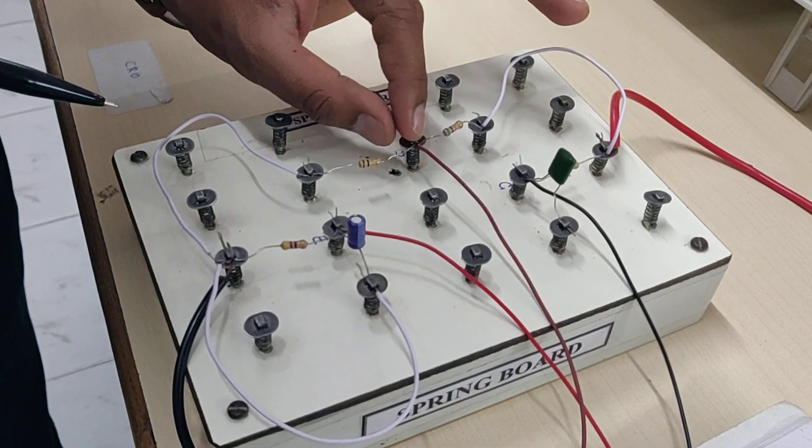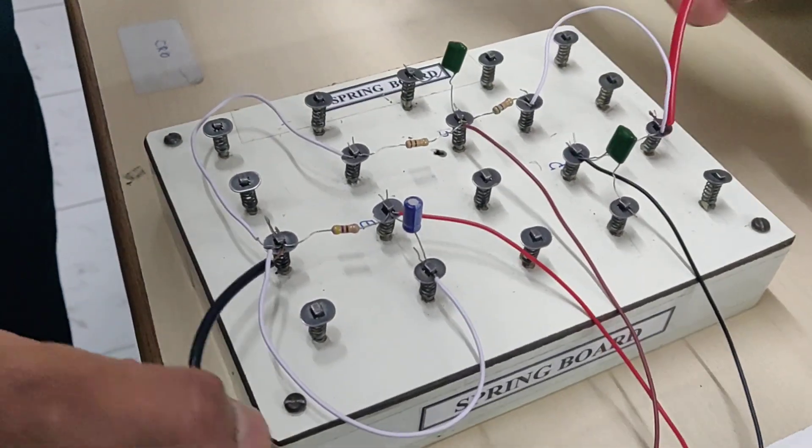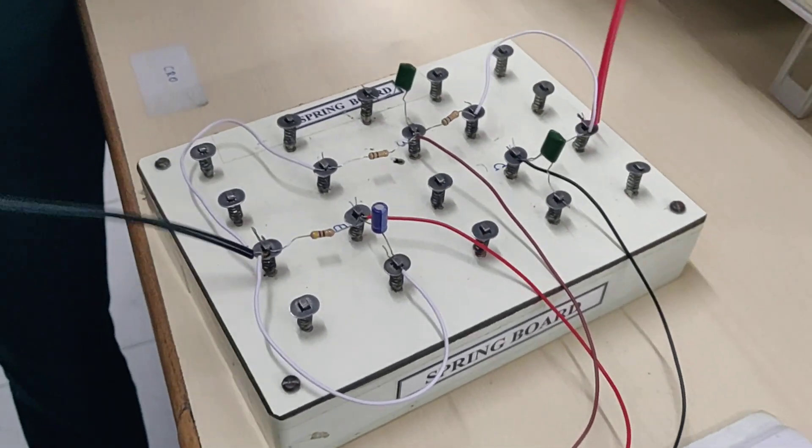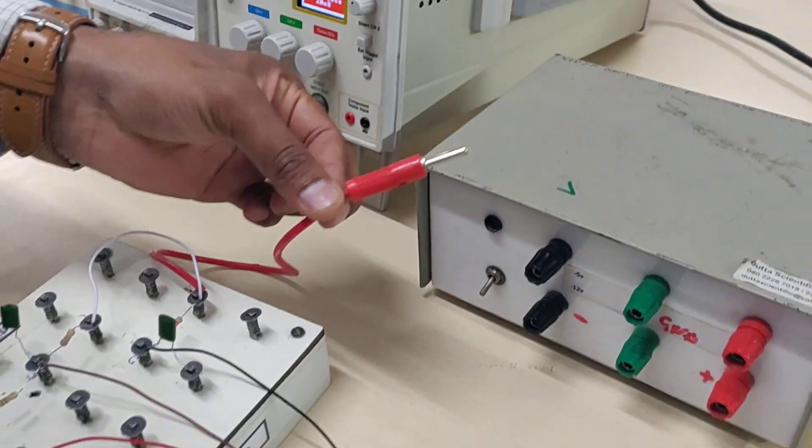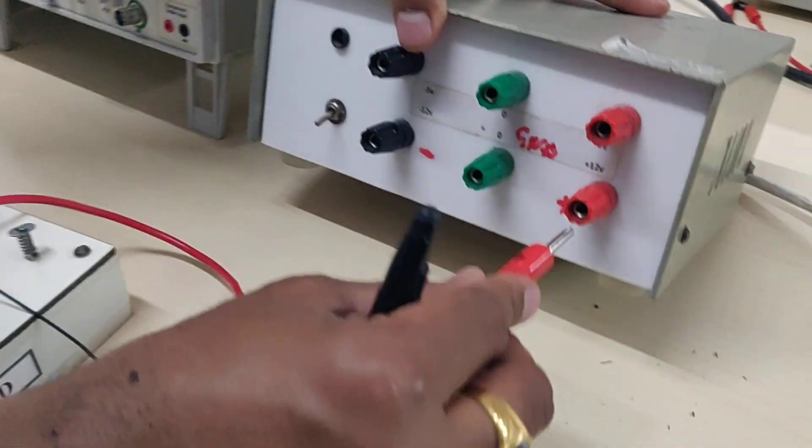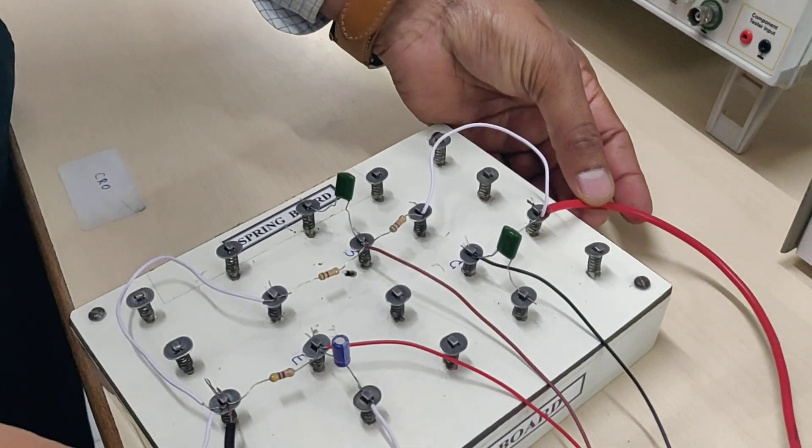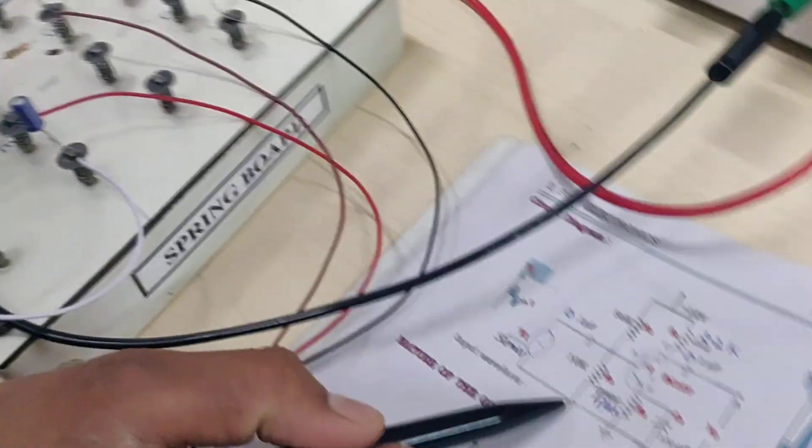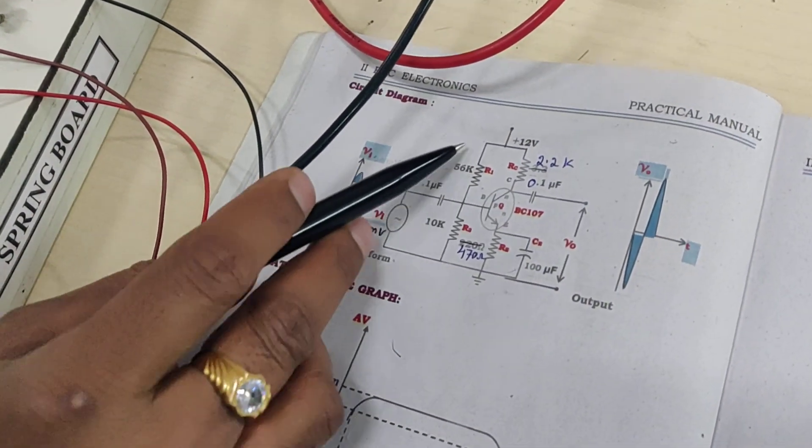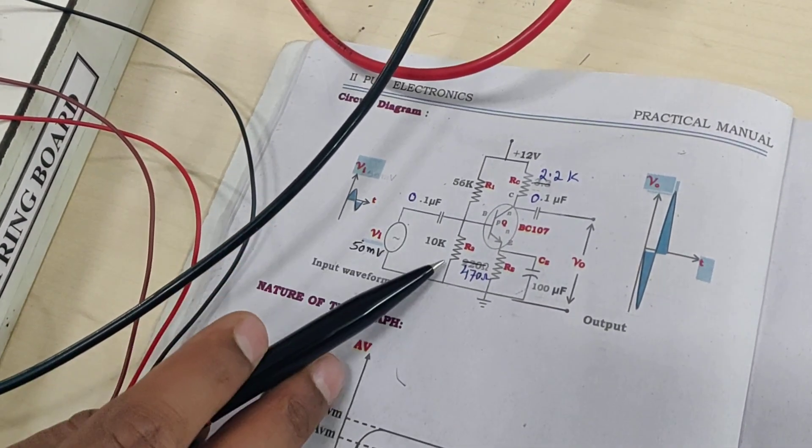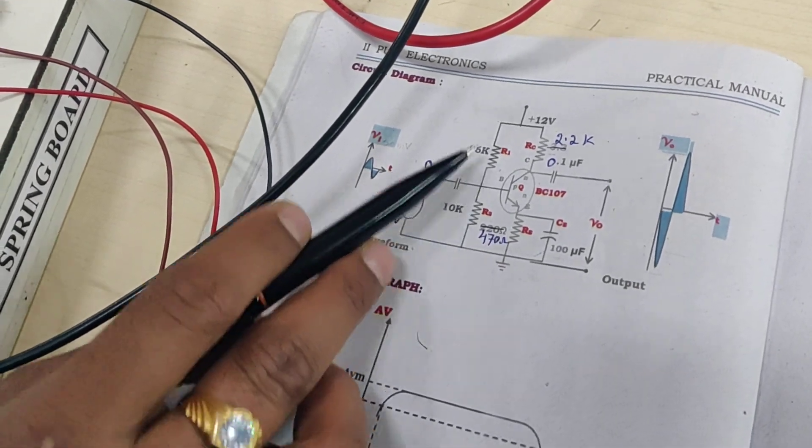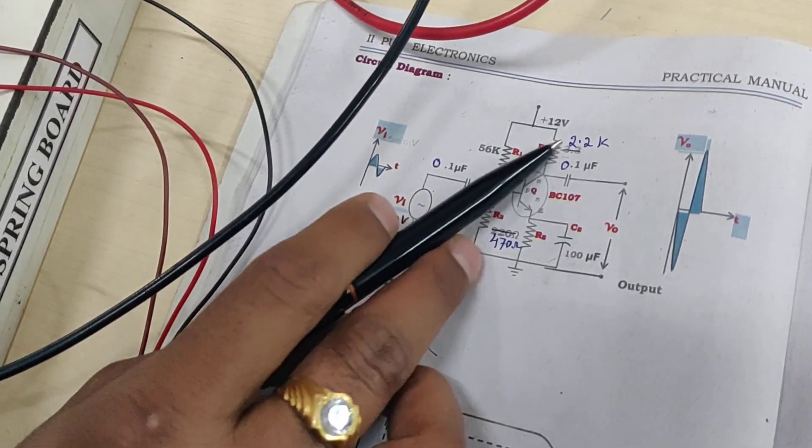At the base, the voltage gets divided. I'm using a 12V supply here with a fixed regulator. This is 12V positive, this is negative. Now we have applied 12V. It is voltage divider biasing as I told you. The 56k and 10k resistors drop the voltage that can drive the transistor.